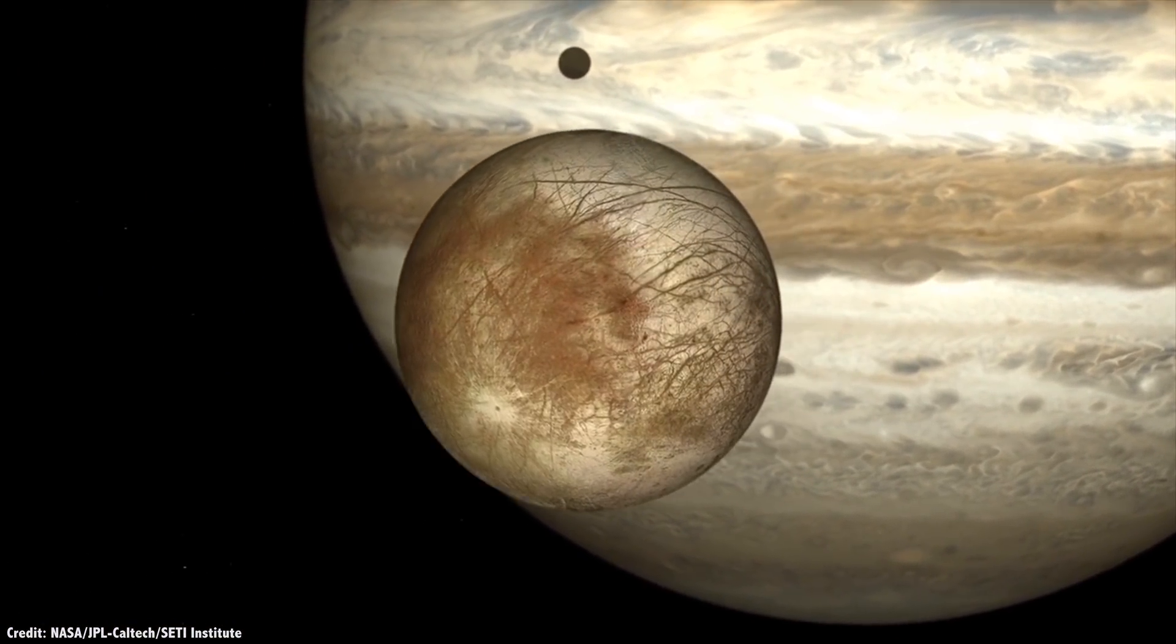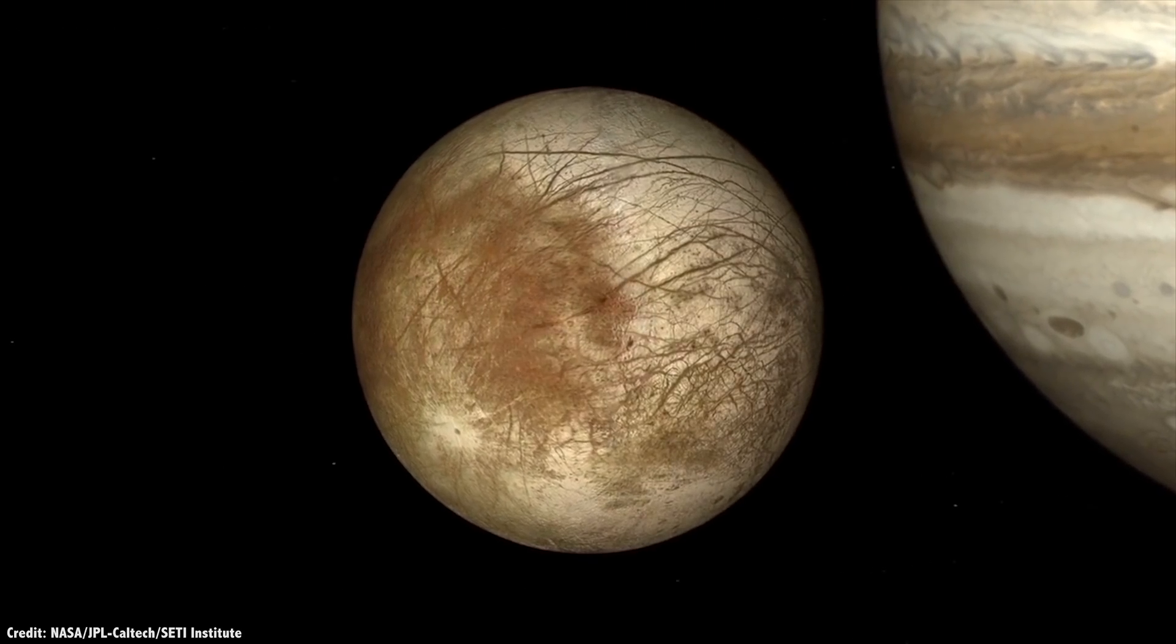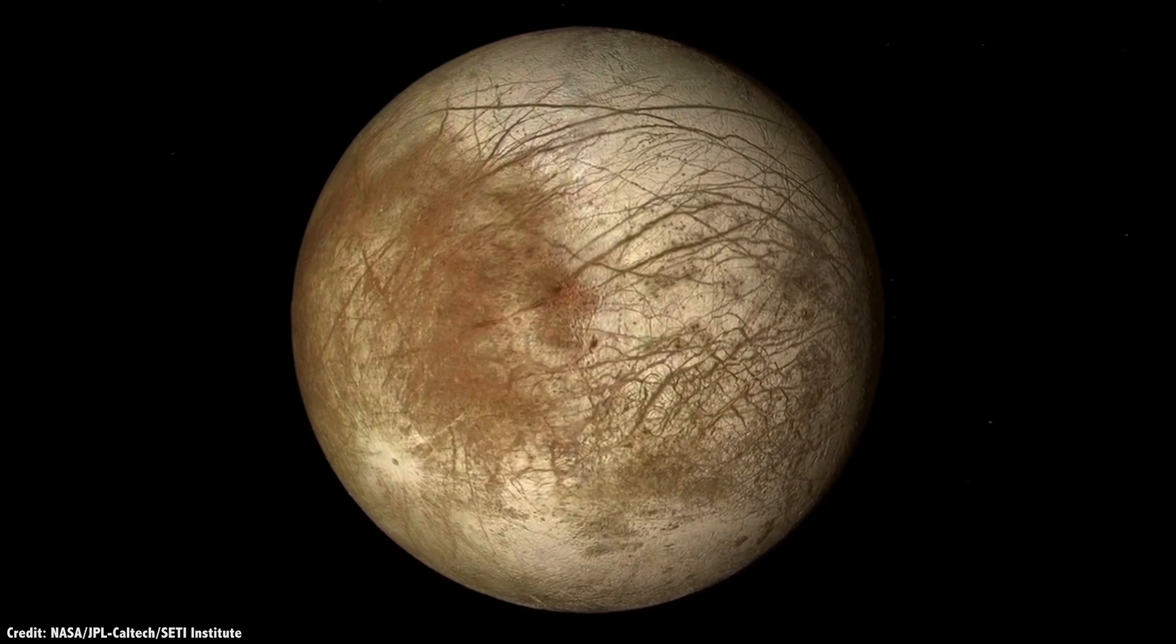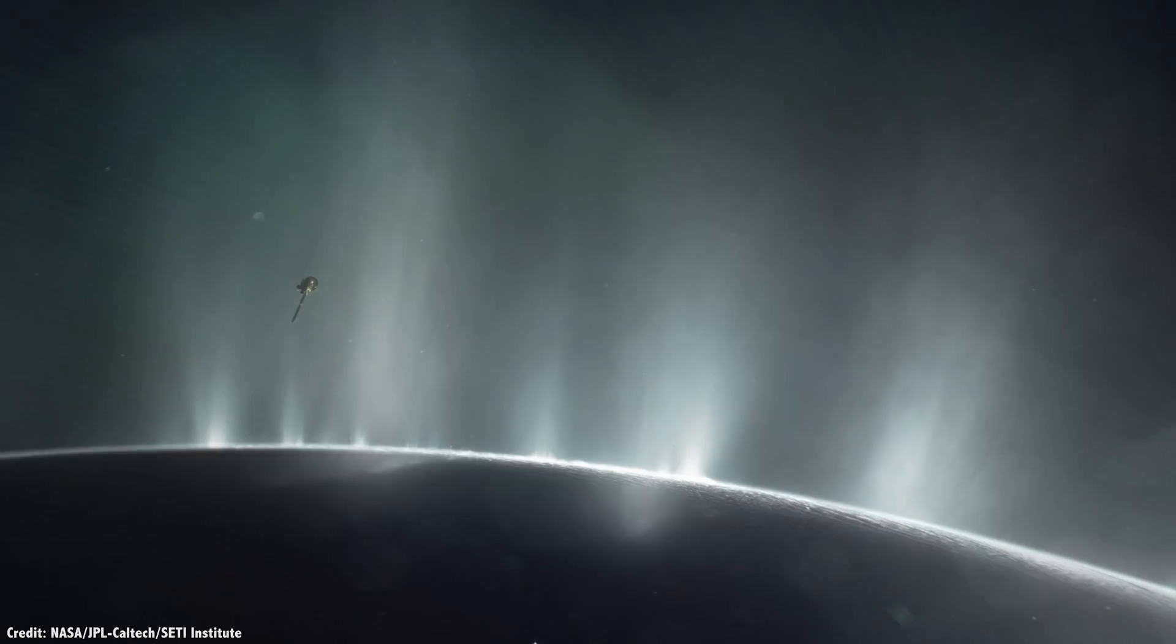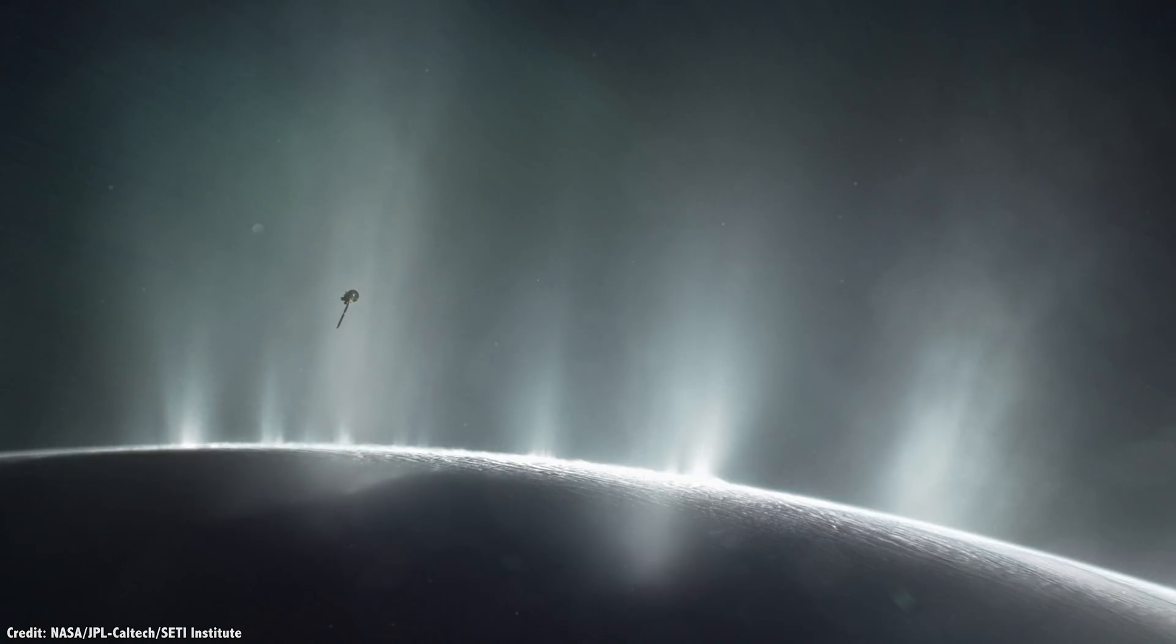We're now learning that icy worlds seem to be the best places in the solar system where life could be hiding. Worlds like Europa and Enceladus, which have vast oceans of liquid water beneath a shell of water ice.